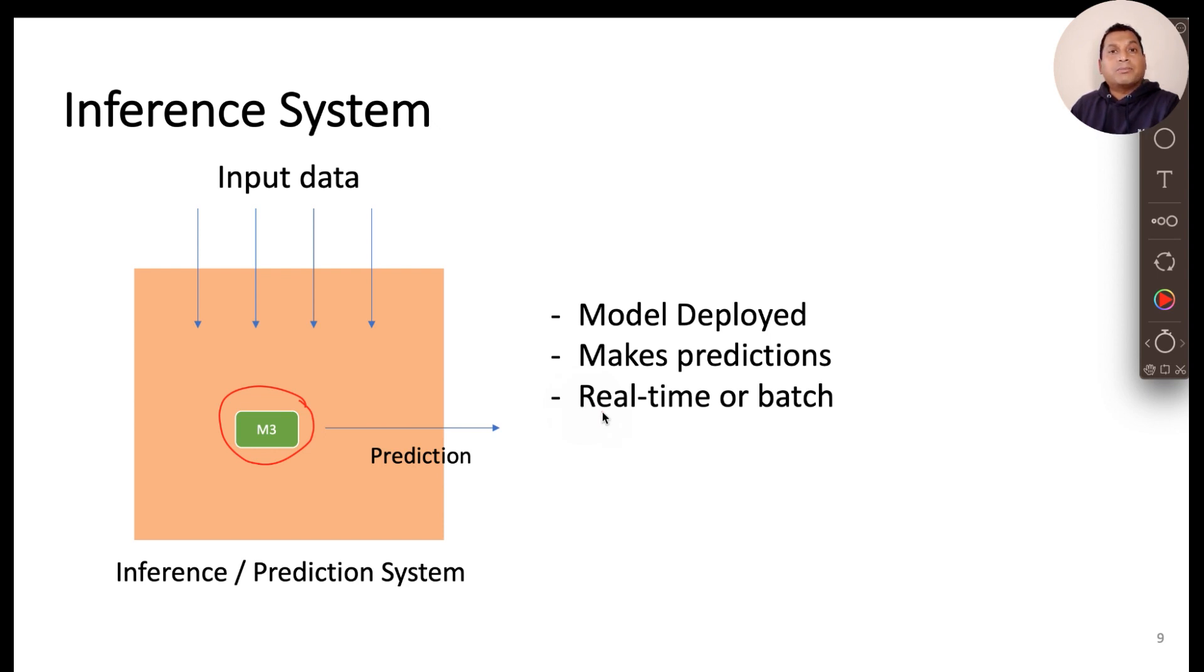Let's take an example of the fraud detection model. So when a new transaction data is received, the model then predicts the likelihood of that transaction being fraud or not a fraud like a score or a probability value.